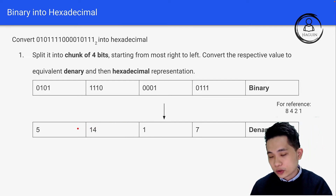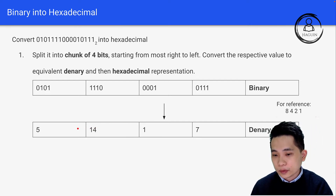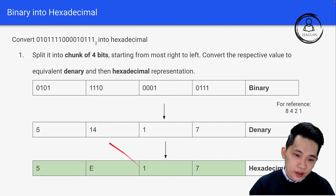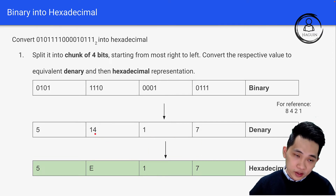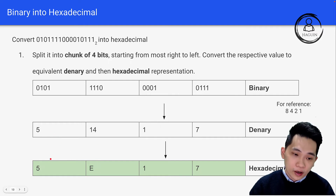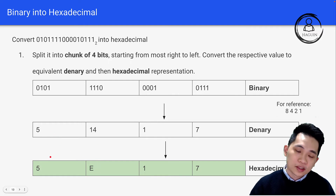Converting to hexadecimal: 7 stays as 7, 1 stays as 1, and 14 becomes E since we can only use a single character. 5 stays as 5. So the hexadecimal form is 17E5.